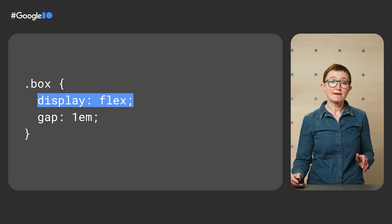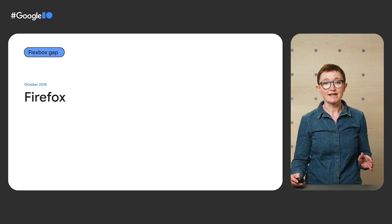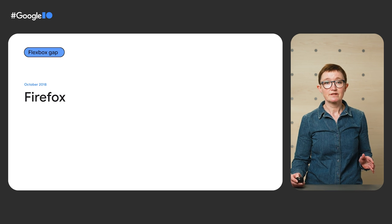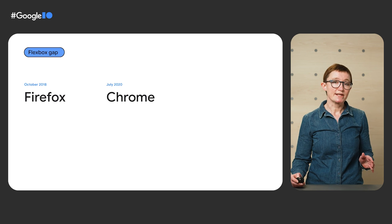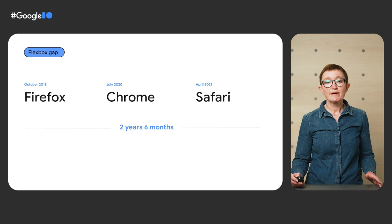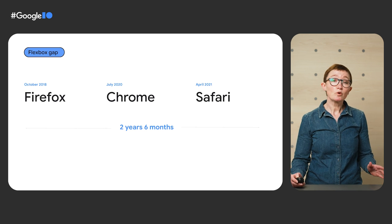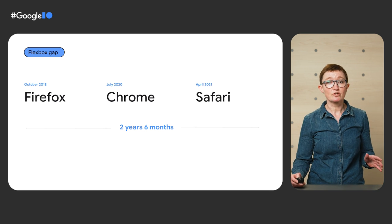It was then specified to work with Flexbox. In October 2018, Firefox shipped the Gap property in Flex layouts. In July 2020, Chrome shipped it. In April 2021, Safari shipped it. So we had a gap of two years and six months before we had the Gap property in Flexbox in all evergreen browsers.